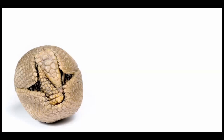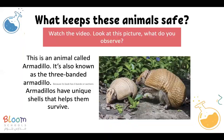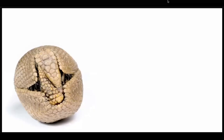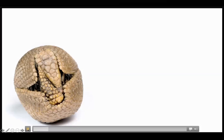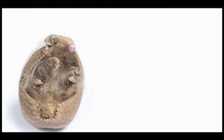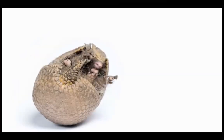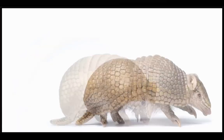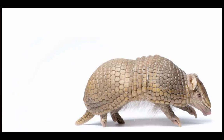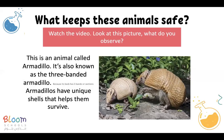This is an armadillo. Students are watching the video and noticing things about this animal — about the structure, the size, the shape, the color. Now we're looking at this picture and talking about the name of the animal. It's an armadillo, and it's the three-banded armadillo.